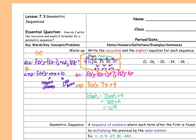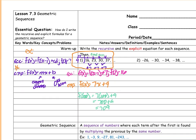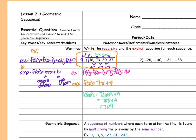Now we're going to do the same thing for the next sequence. Exactly the same thing. How do I get from negative 26 to negative 30, negative 30 to negative 34, and negative 34 to negative 38? I am subtracting four.